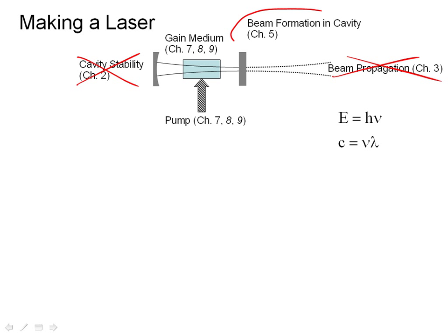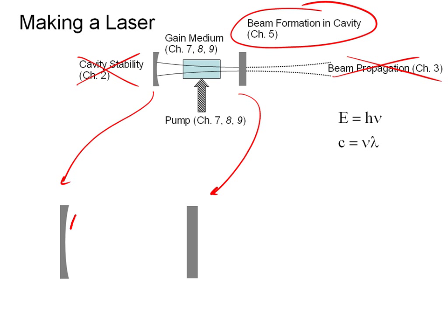And we're working on beam formation in the cavity, and we learned last time that the cavity mirrors, we're just basically blowing this up here, the cavity mirrors form a Gaussian beam, and the radius of curvature of the beam at the mirrors has to match the surface of the mirrors.